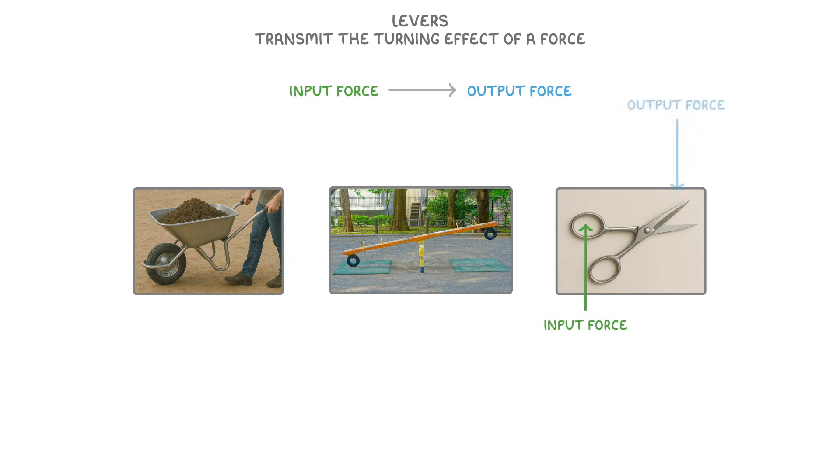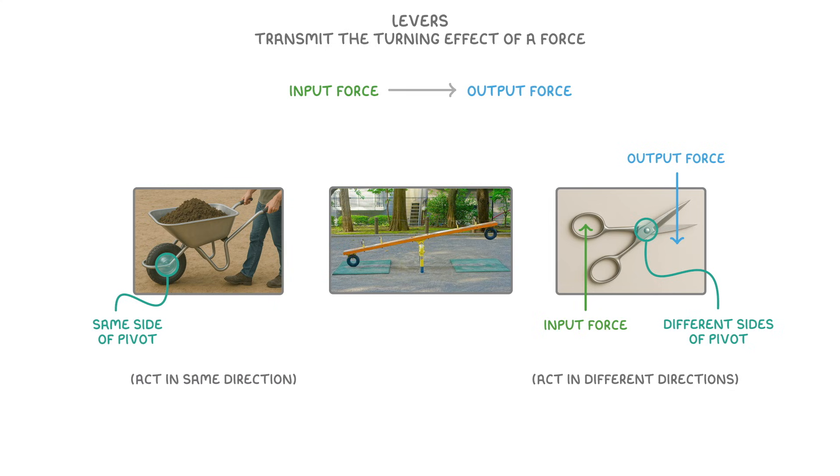One is that if the input and output forces are on different sides of the pivot, like in the case of our scissors, then they'll act in different directions, so one up and one down. Whereas if they're both on the same side of the pivot, like in our wheelbarrow, they'll both act in the same direction, so in this case they're both acting up.